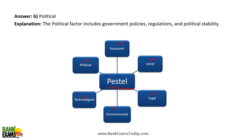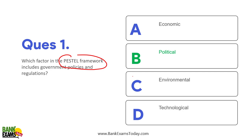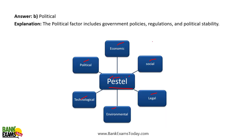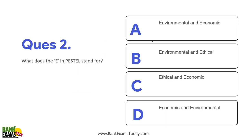Please remember: P means political, E means economic — the economic situation or economic environment in the country — S means social, L means legal, T means technological and E means environmental. Please remember the full form — that is the most important thing. Which factor in the PESTEL framework includes government policies and regulations? It is political. E stands for both economic and environmental.